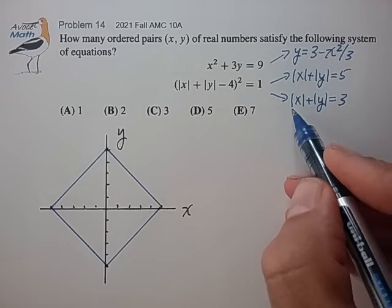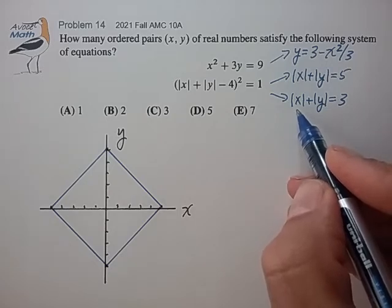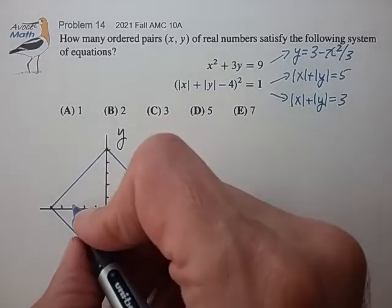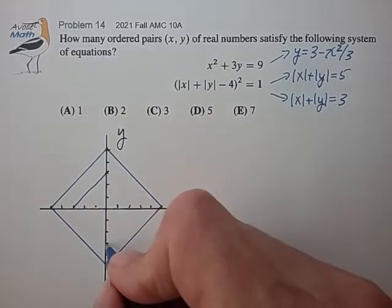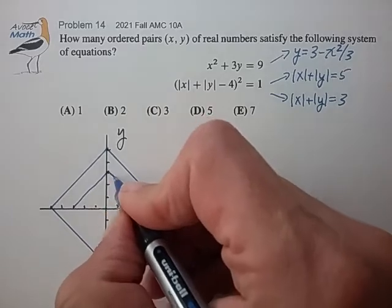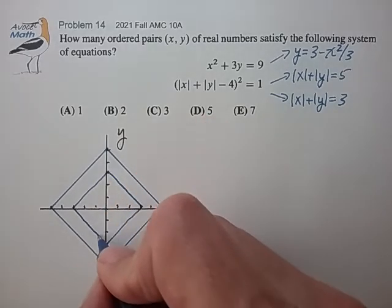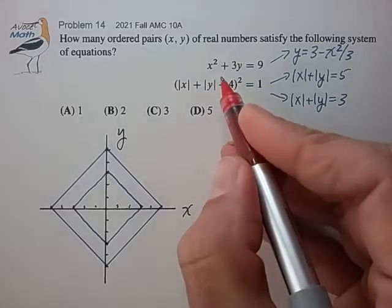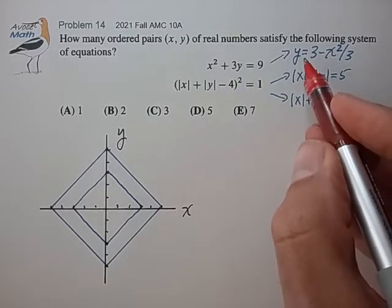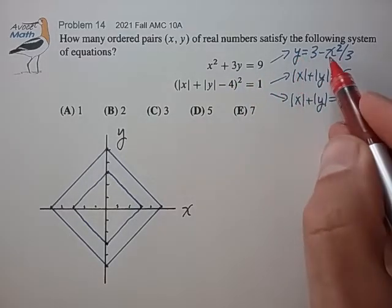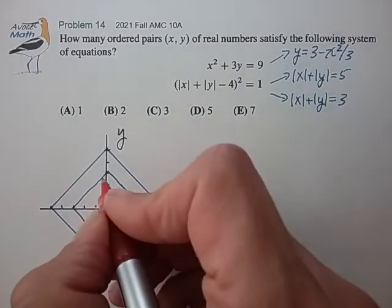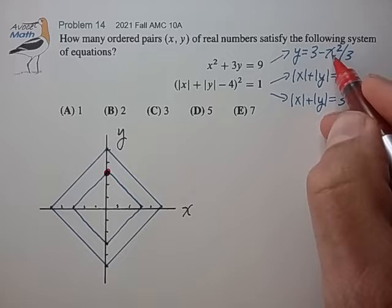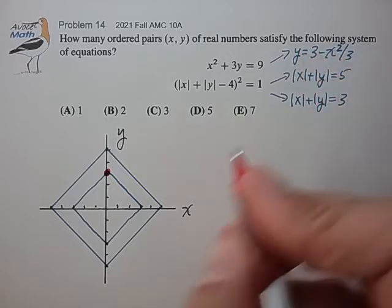Now the last equation would be a diagonal square that intersects both axes at plus or minus 3, so that would look like this, and the parabola crosses the y-axis at x equals 0, and that's 3, and at x equals plus and minus 3, y is equal to 0.